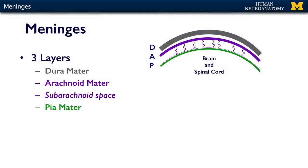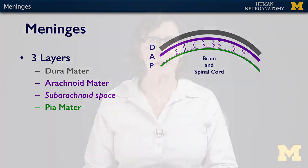Beneath the arachnoid mater is the subarachnoid space, which contains cerebrospinal fluid. The innermost, or the deepest layer, is the pia mater. Pia meaning delicate, so it's the delicate mother. And it's only two or three cell layers thick — it's an epithelium, and it is so adherent to the surface of the brain that you can't peel it off.